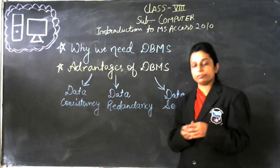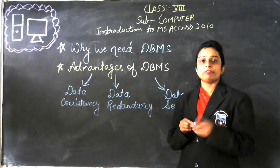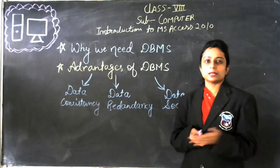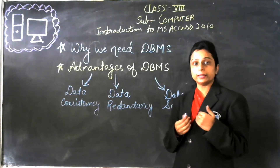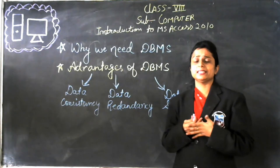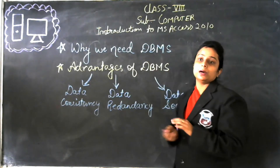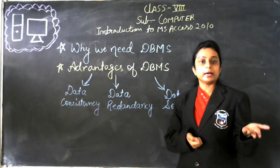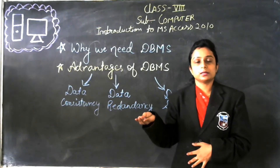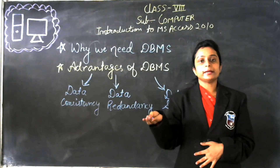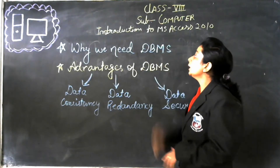Before DBMS, we were maintaining data in a traditional way — in files, in diaries, in copies. But after we got the software of DBMS, it is very easy for us to maintain data. So if a stranger comes and asks about some kind of data, or if we want to hide some kind of column like contact number or personal address, we can hide this information also. That is why we are using DBMS.